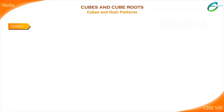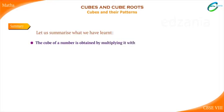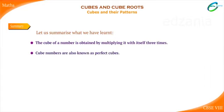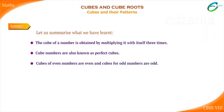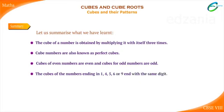Summary. Let us summarize what we have learnt. The cube of a number is obtained by multiplying it with itself 3 times. Cube numbers are also known as perfect cubes. Cubes of even numbers are even and cubes of odd numbers are odd. The cubes of numbers ending in 1, 4, 5, 6, or 9 end with the same digit. Each prime factor of a number appears 3 times in the prime factorization of its cube.